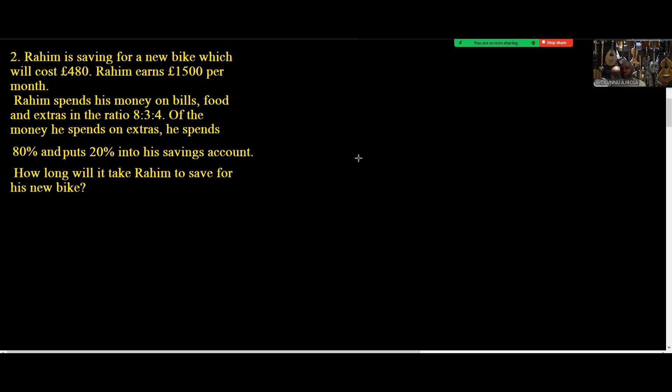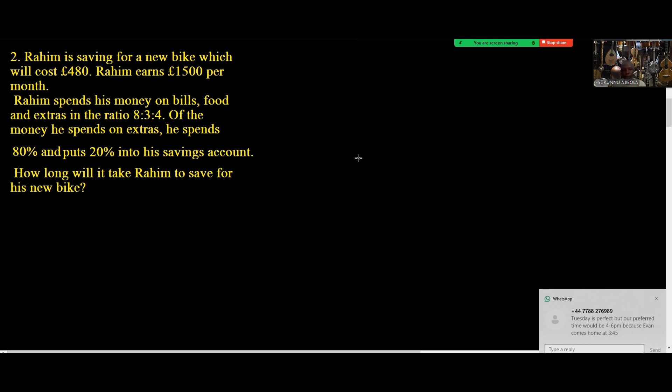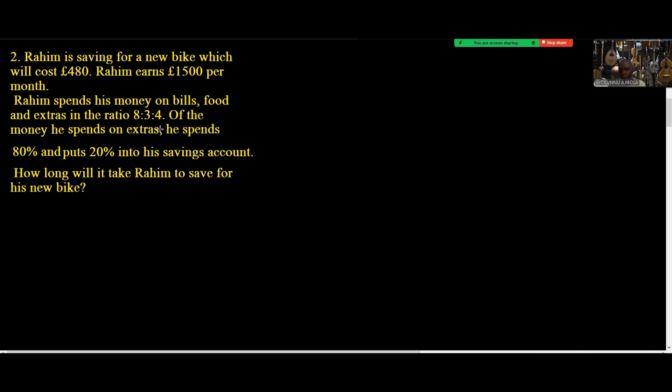Rahim spends money on bills, food, and extras in the ratio 8:3:4. So bills take the ratio 8, food takes 3, and extras take 4. Let's take note of that. So if the money he spends on extras, he spends 80% and puts 20% into his savings account.